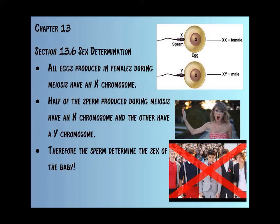All eggs are going to be X chromosomes, but the males actually determine the sex of the child. The sperm that has an X chromosome, if it fertilizes this egg, that will make a girl. If we have a Y chromosome sperm and it fertilizes the X, we'll have an XY, or a male. So half of the sperm produced during meiosis have an X chromosome, and the other half have a Y — it's kind of a 50-50 shot. That doesn't necessarily determine the gender; what matters is whether that X or that Y makes it and fertilizes the egg.